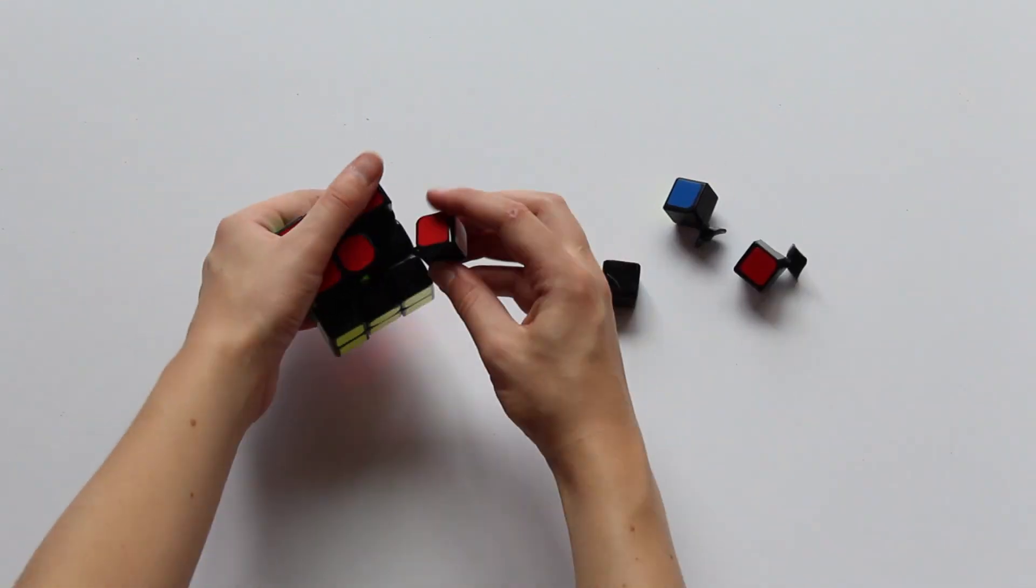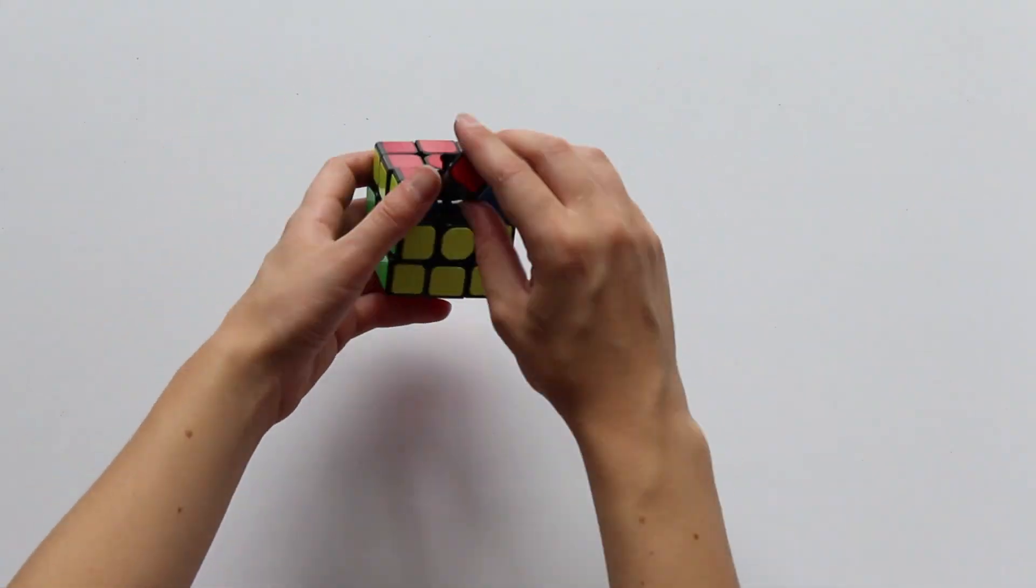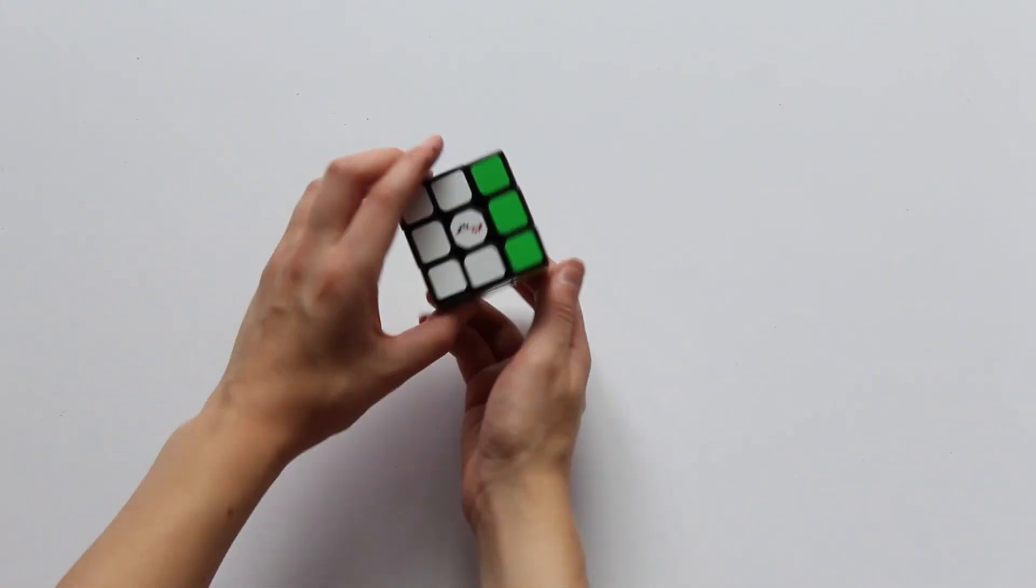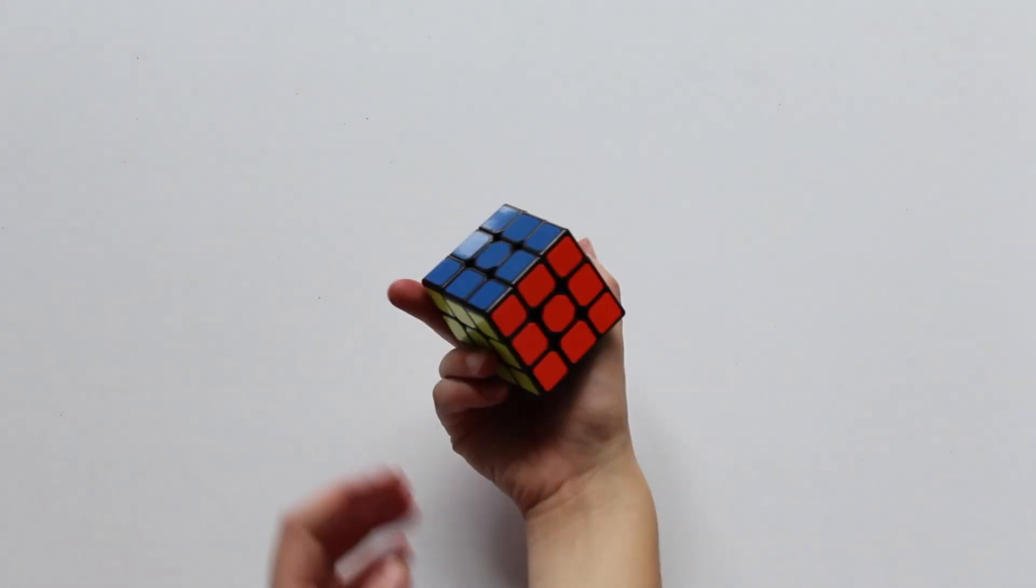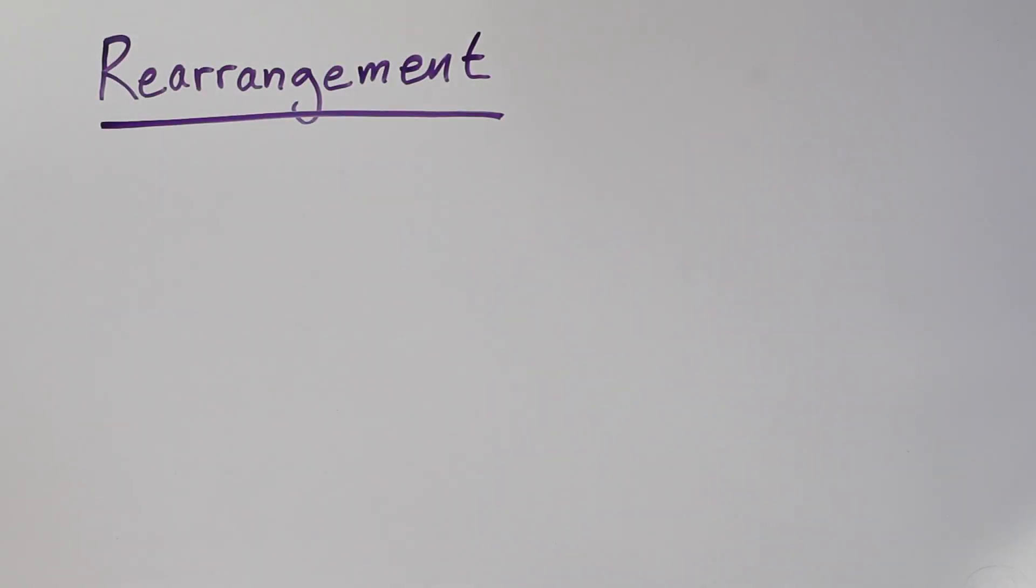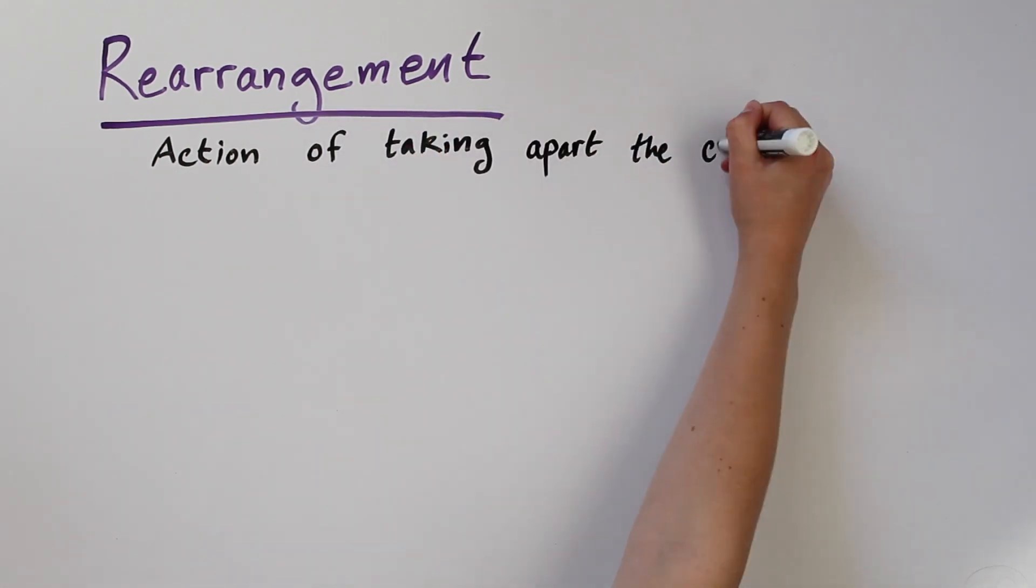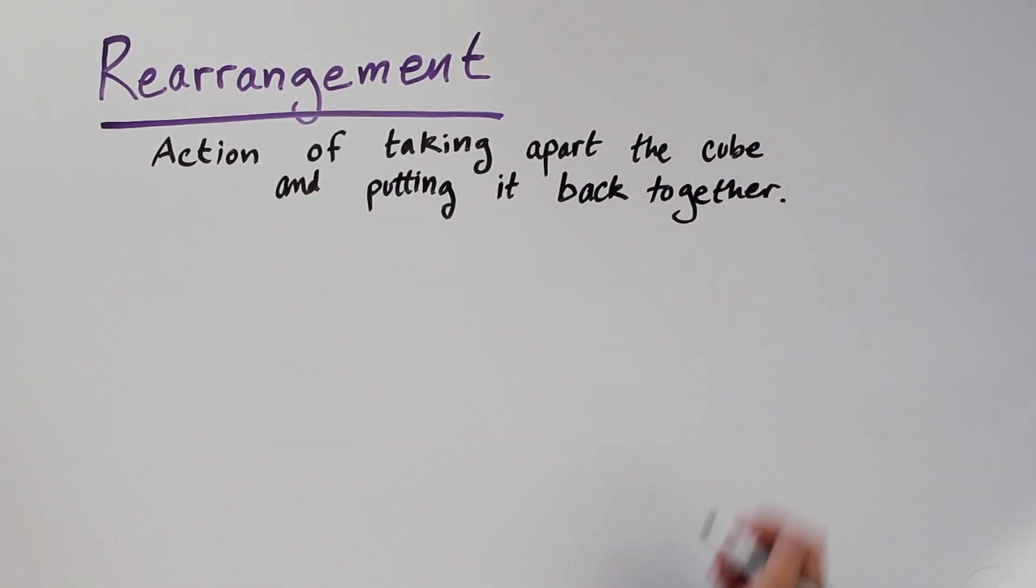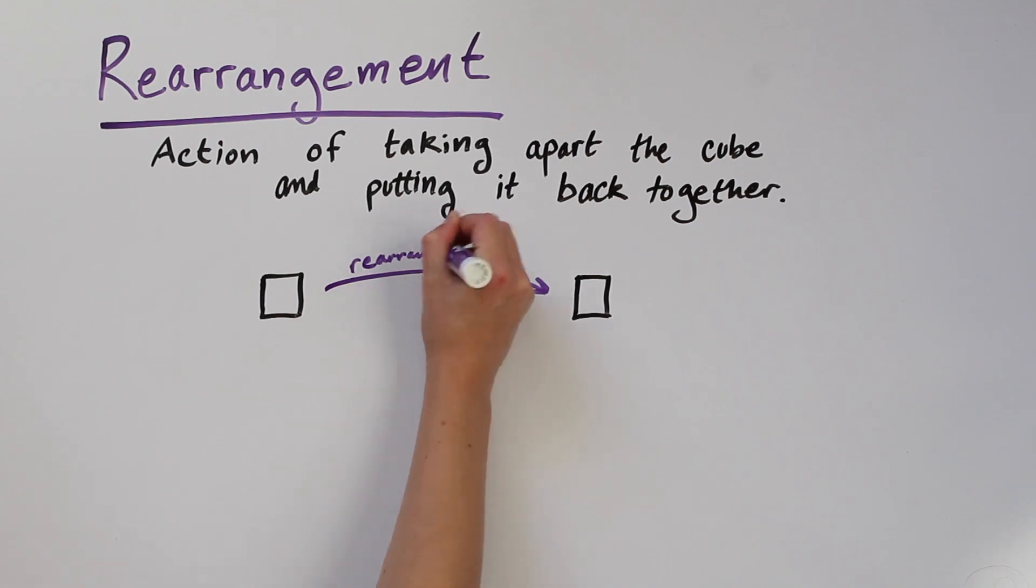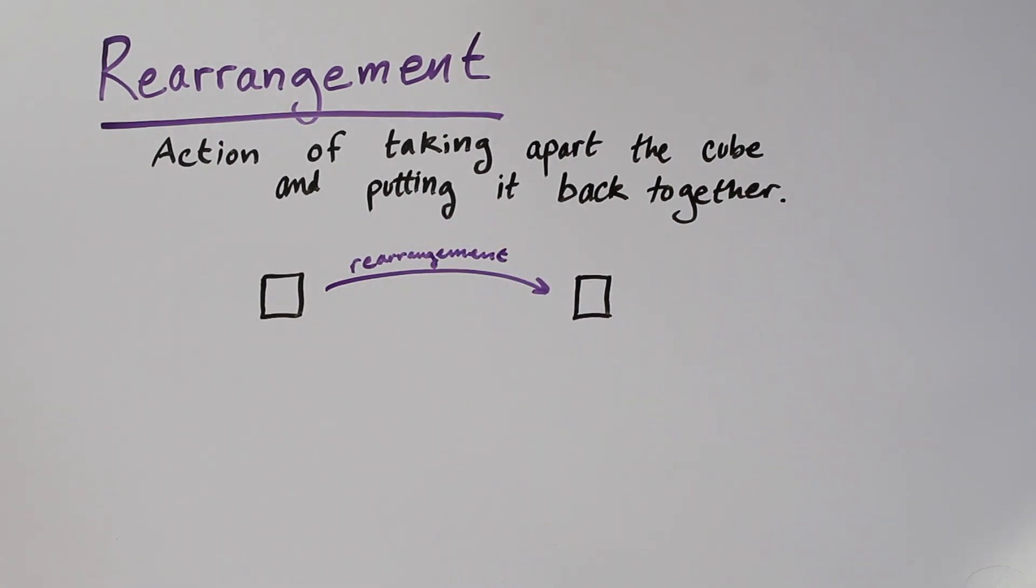That is, we could take all the pieces apart and then put them back together so it looks like we've performed a face move. So let's define a rearrangement of the cube to be an action of taking it apart and putting it back together. And we can always get from one arrangement to another via a rearrangement. But if we are only allowed to perform these special rearrangements, which are the face moves, then we get stuck inside of one type of cube.